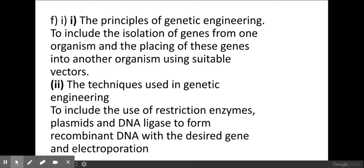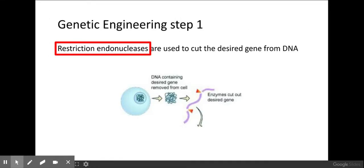Those are some examples of why we would use genetic engineering. Now let's look at some of the steps involved. The first thing we do is isolate the gene that we want to manipulate. For example, our desired gene could be the human gene that codes for insulin, which we would isolate from the human genome.